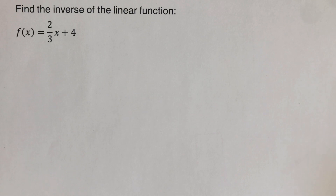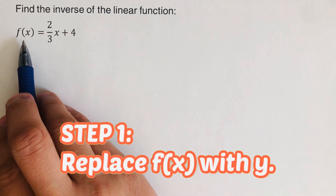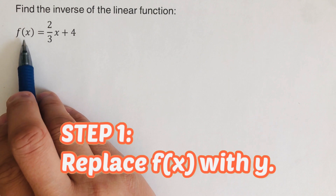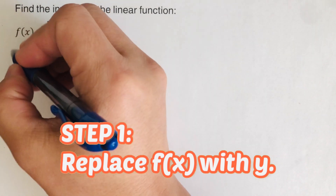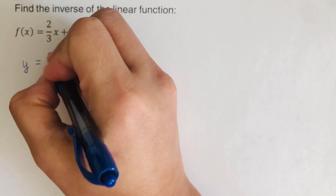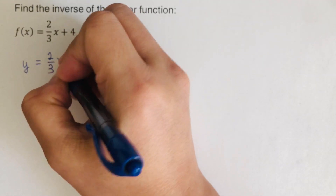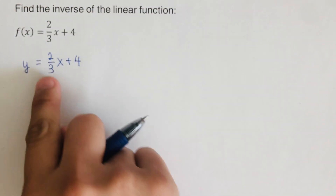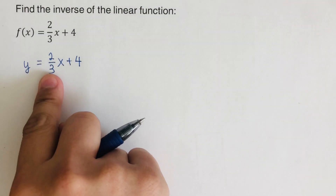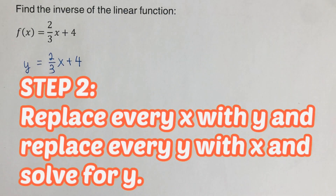Now for the next example. Step one: replace f(x) with y. For f(x) = (2/3)x + 4, we write y = (2/3)x + 4.